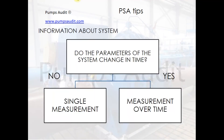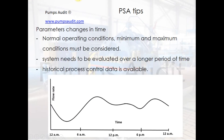During measurement planning, it is necessary to know whether the parameters of the system change over time. If no, then a single measurement will be enough. If yes, measurements over time will be necessary. If we are talking about a system with changing parameters — for example, a water supply system — it is necessary to make measurements over time.